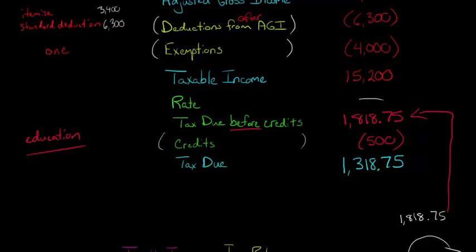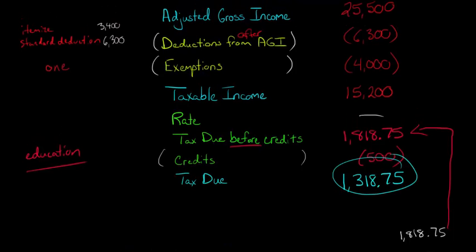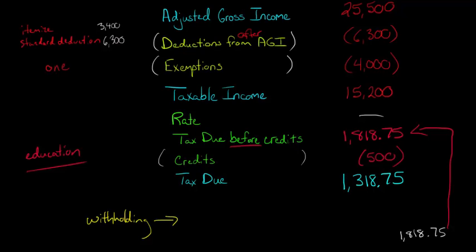Even after doing all this, you might ask: is this the amount I send to the IRS? But you have to remember withholding. When you look at your W-2, assuming you have an employer and you're not self-employed, you had federal income tax withheld from your paychecks. Some money was being withheld under the assumption that you'd have some tax due. Let's say your withholding was $1,400 — that was withheld for federal income tax purposes, and you'd see it on your W-2.